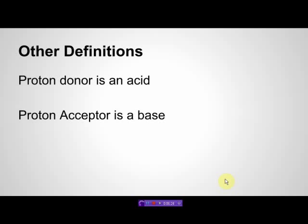There are some other definitions of what an acid or a base is. Another definition is a proton donor being an acid and a proton acceptor being a base. A proton in acid-base chemistry typically refers to a hydrogen nucleus — essentially a positively charged hydrogen nucleus without its electron. We'll save this definition for chemistry class rather than physical science, as chemistry will get into more of these definitions.